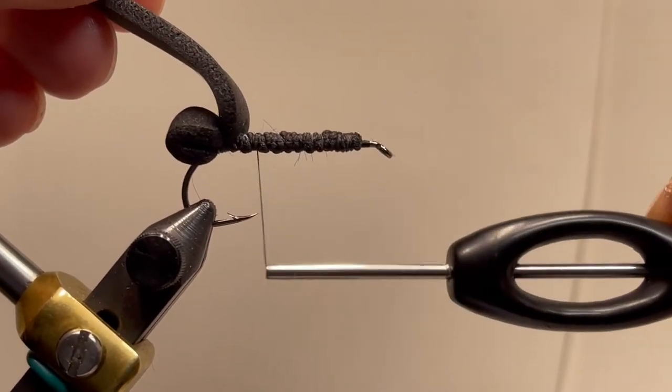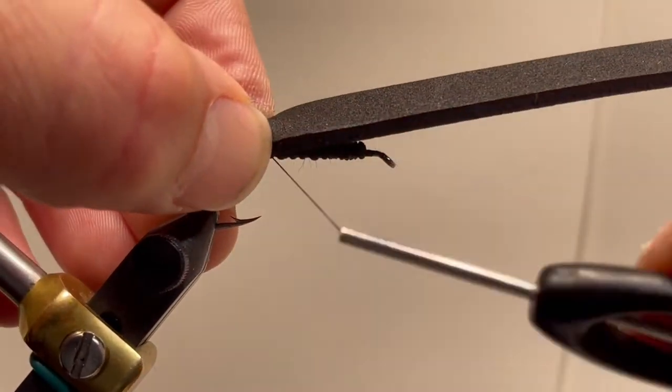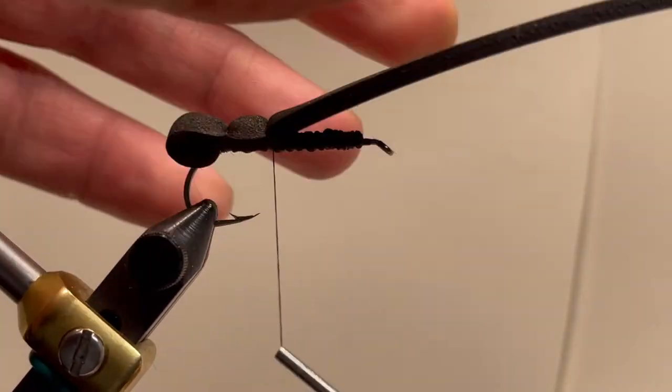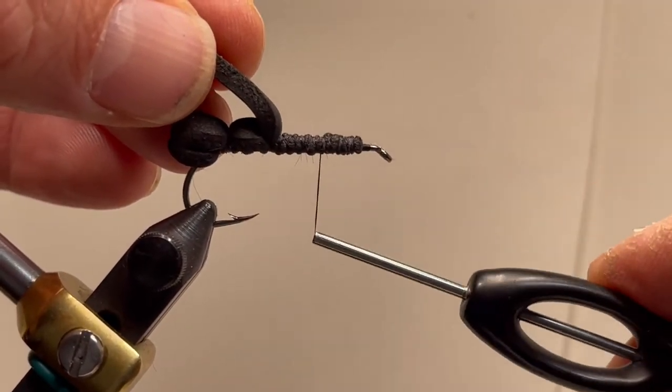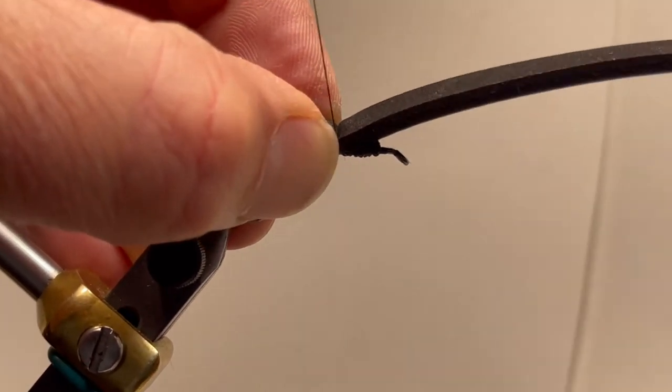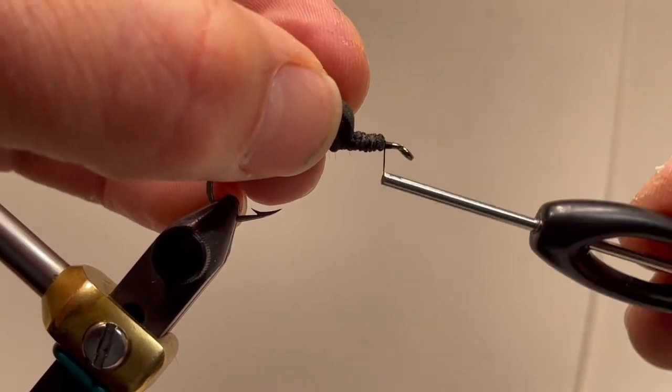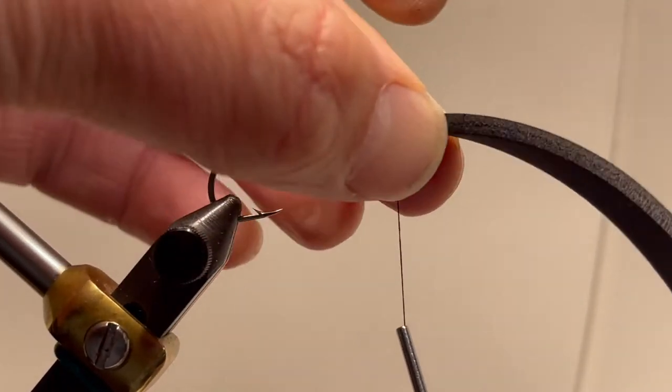Bring our thread up to about the point of the hook. A few wraps to secure that down for segmentation. Divide the remainder in half. Another wrap over the foam and then finally up to the eye where we'll secure it.